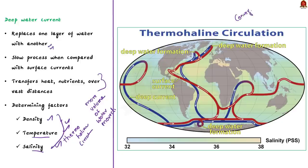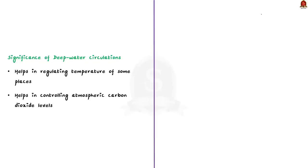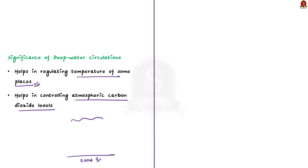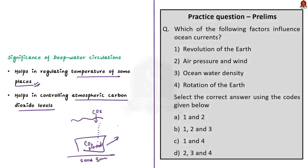Now let us see the significance of deep water circulation. The deep water circulation helps in regulating the temperature of some places on Earth. Secondly, it plays a critical role in controlling atmospheric CO2 levels by helping transport carbon from the surface of the ocean to the deeper parts. Water in the deeper sections of the ocean stores carbon dioxide for longer periods than surface water. So these deep water currents play a significant role in combating climate change. In this discussion, we saw the basics about deep water circulation and its significance.